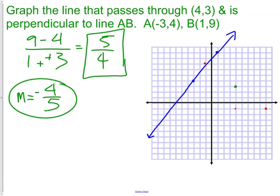Now, if we play connect the dots with those three dots, we have created the line that is perpendicular. We have graphed the line that is perpendicular to the first line, AB, and it passes through the point four, three.